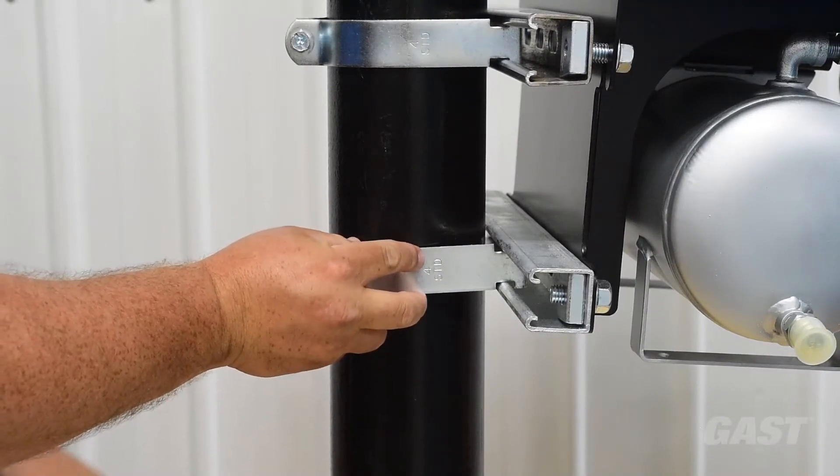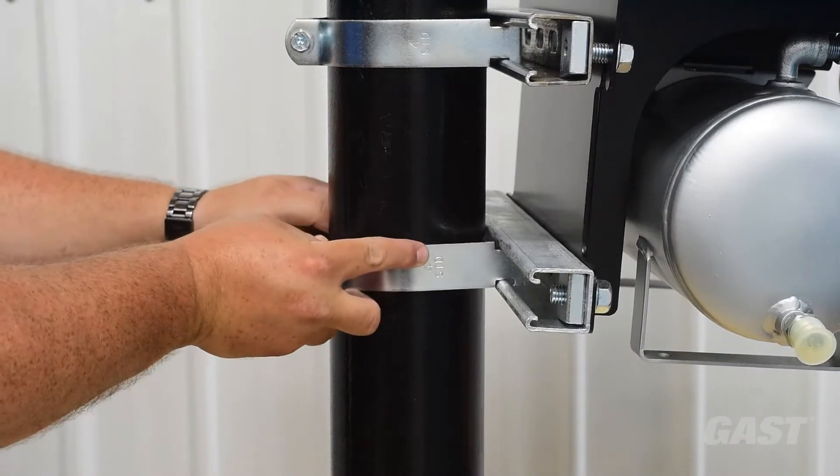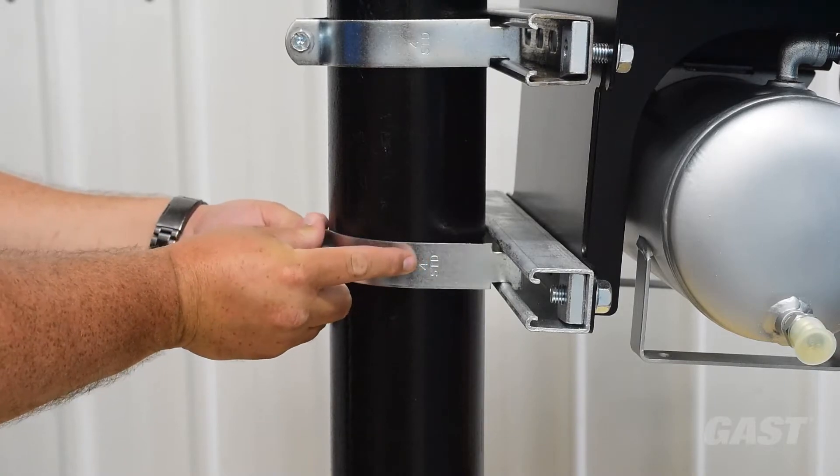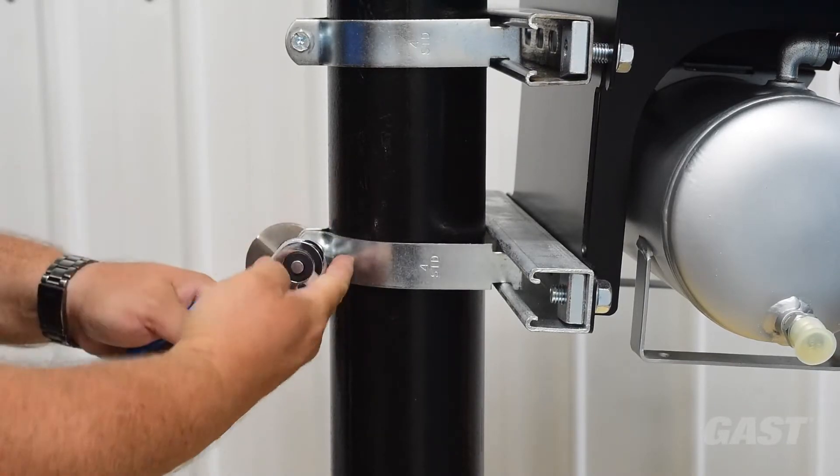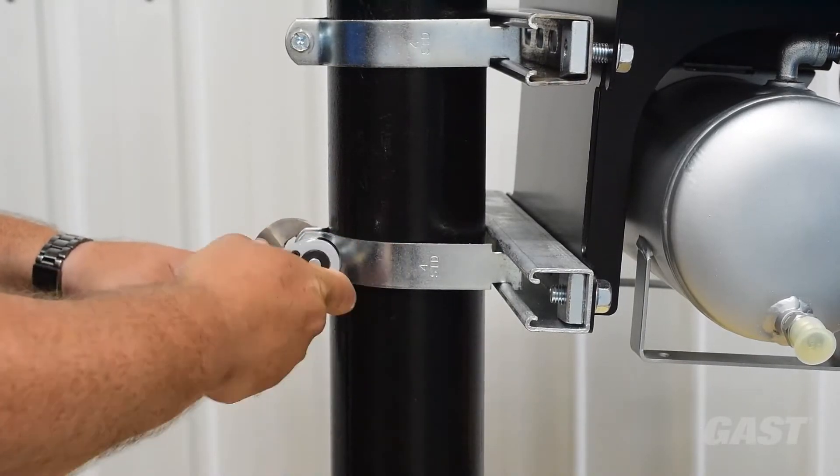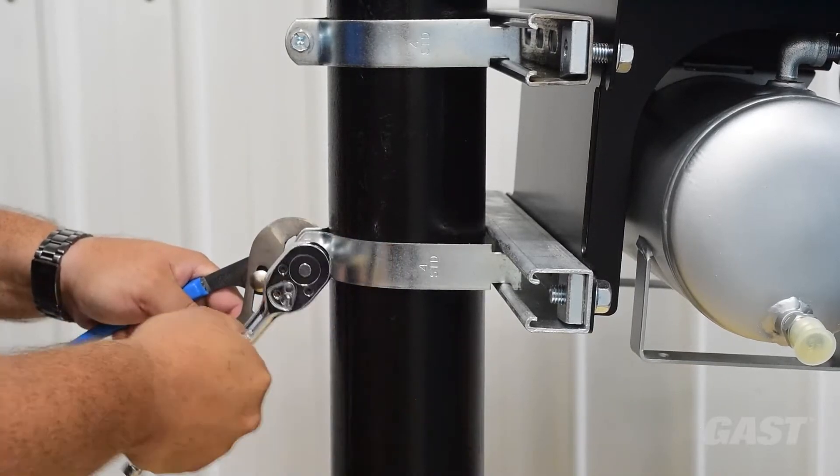Separate the second set of clamps and insert them into the bottom strut channel that is factory mounted to the system frame. Fully tighten the nuts using appropriately sized tools.